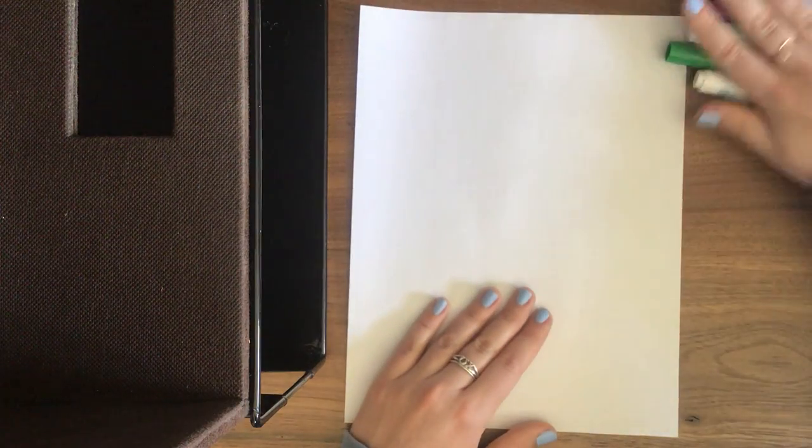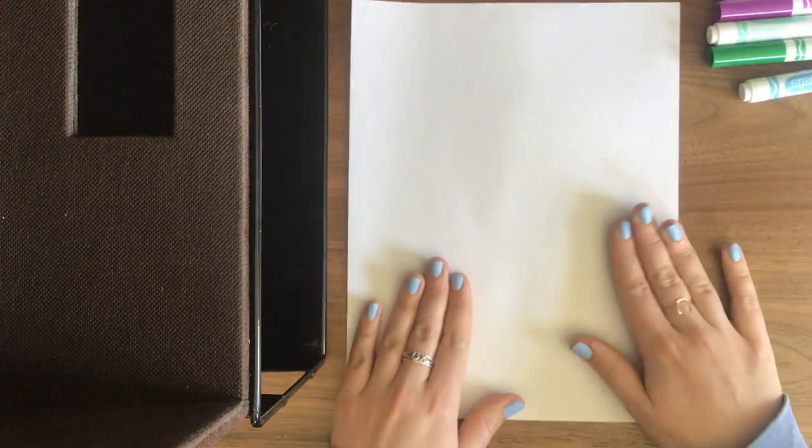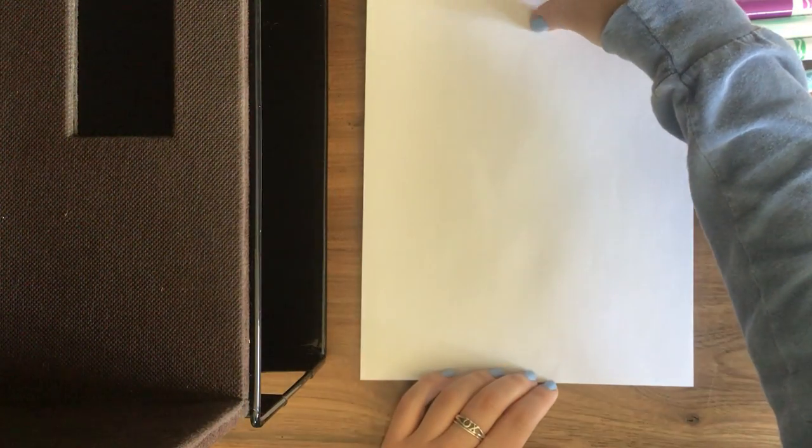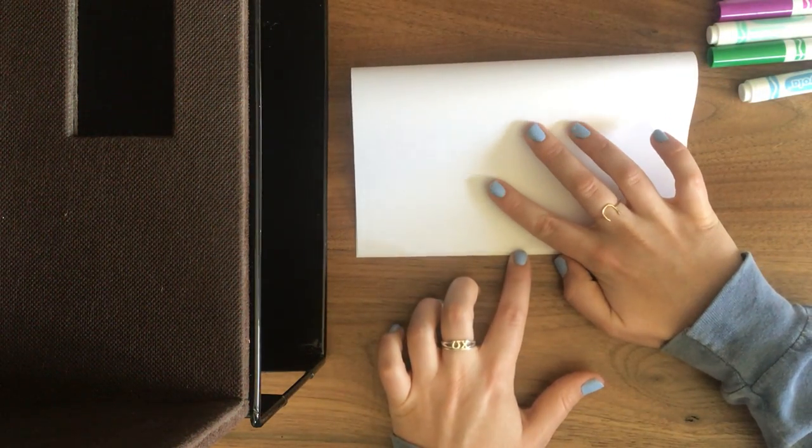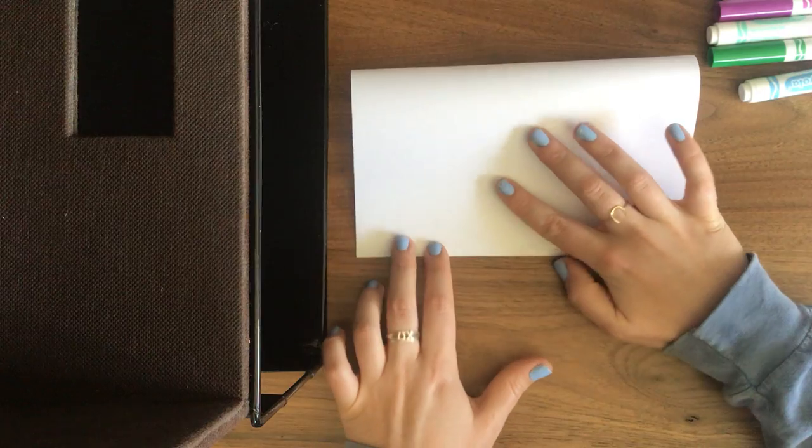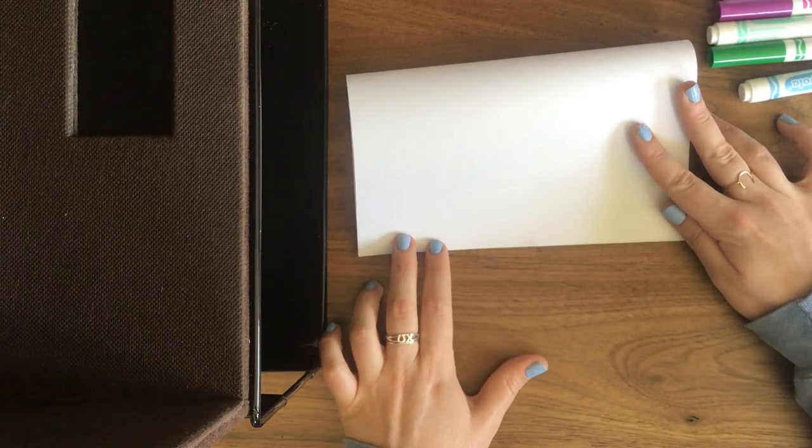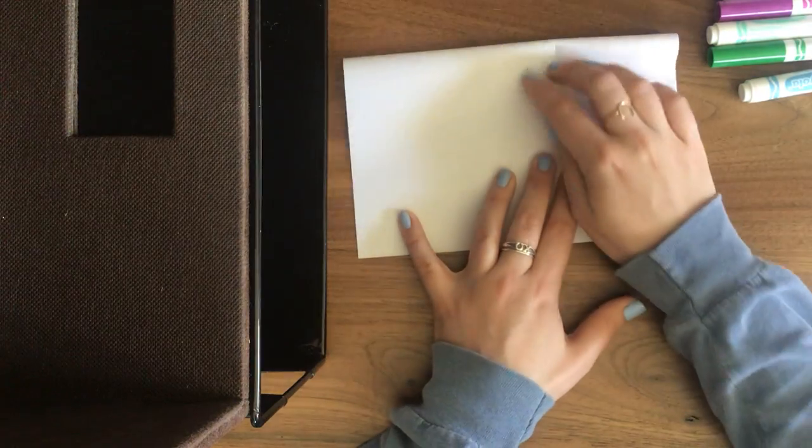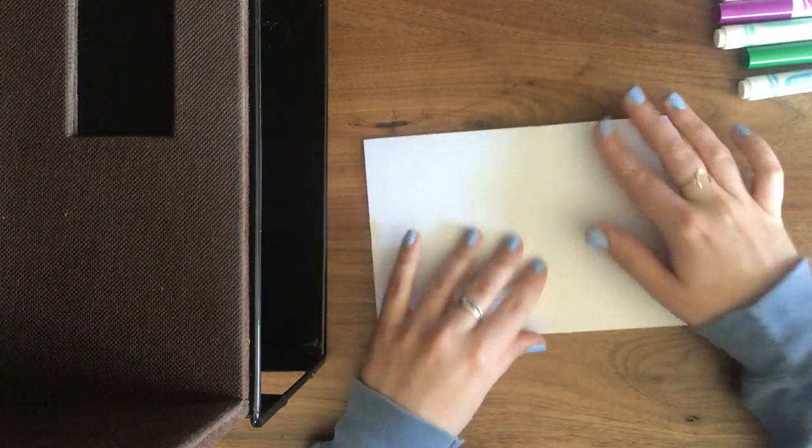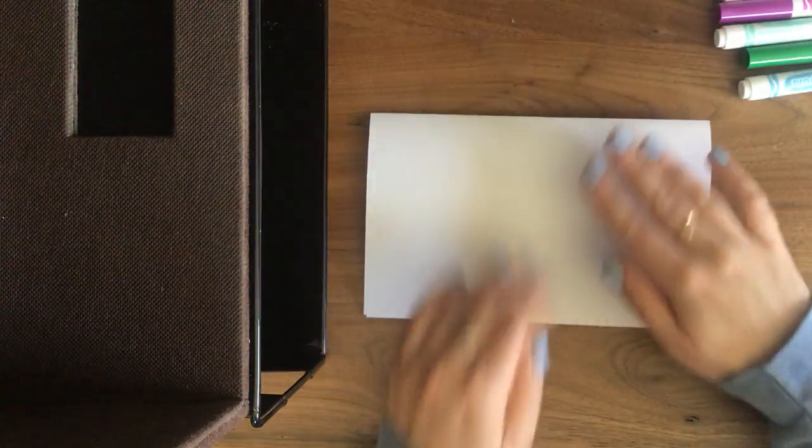So what I'm going to do is I'm going to start with my folding. You're going to take your paper and you're going to fold it hamburger style. Line up the edges. So I just folded it down hamburger style.